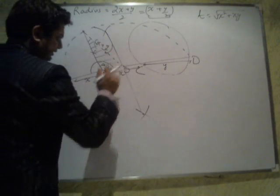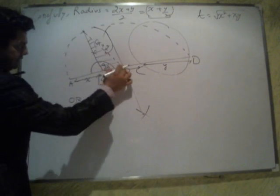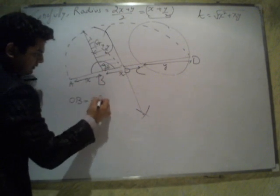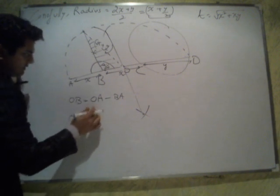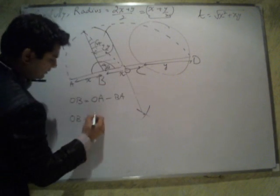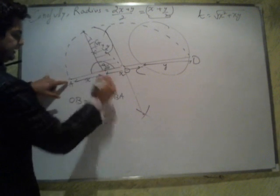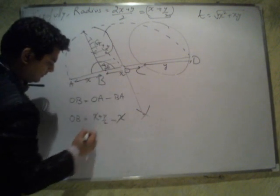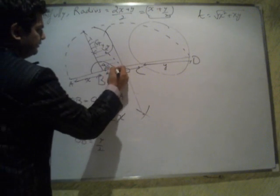And this length OB, OB seems to be OA minus BA. And OB seems to be, OA is radius again, that is X plus Y by 2, minus BA is X, and OB I am handling as Y by 2.